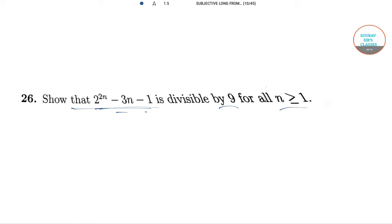Now, this part can be written as 4 raised to the power n minus 3n minus 1, which equals 1 plus 3 raised to the power n minus 3n minus 1, which equals 1 plus 3n plus